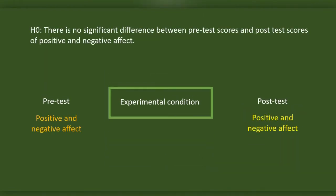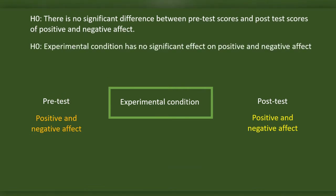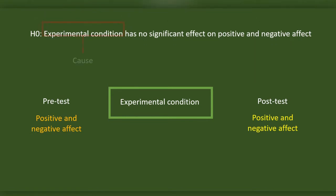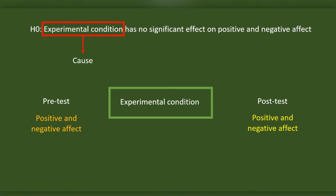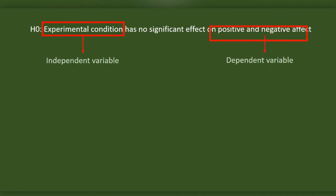Using a Paired Sample T-Test, we will test the null hypothesis that there is no significant difference between pre-test and post-test scores of positive and negative effect. More specifically, the null hypothesis is that the experimental condition has a significant effect on positive and negative effect. The experimental condition is the independent variable, and change in positive or negative effect is the dependent variable.